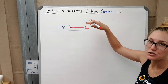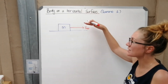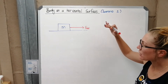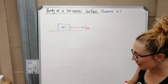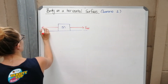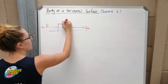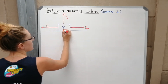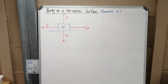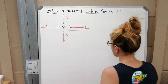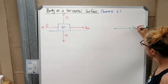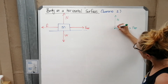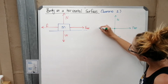Scenario two involves a horizontal surface with applied forces at an angle, but for scenario one we're just looking at forces that are either perpendicular or parallel to the surface. So the body might experience an applied force, friction, a normal force from the surface, and its own weight acting downward. The free body diagram for this scenario would show a dot with applied force, normal force, weight, and frictional force.